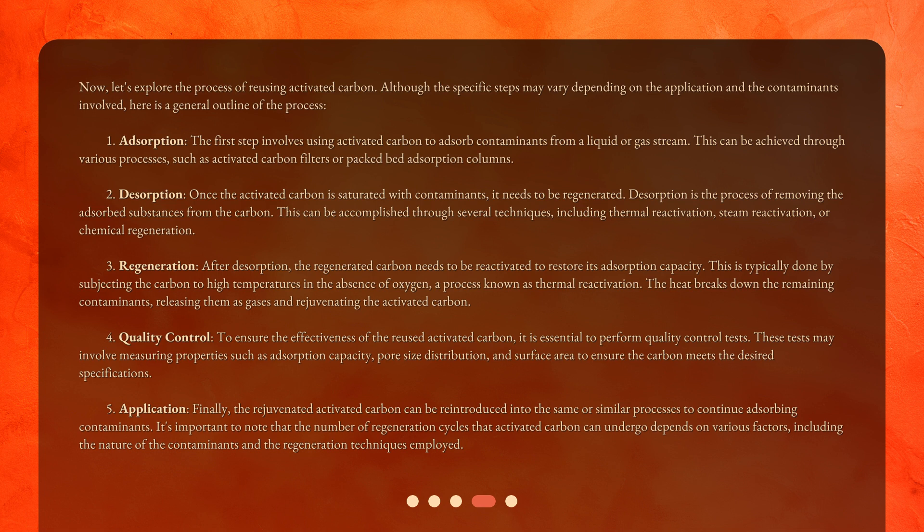Step two — desorption: once the activated carbon is saturated with contaminants, it needs to be regenerated. Desorption is the process of removing the adsorbed substances from the carbon. This can be accomplished through several techniques including thermal reactivation, steam reactivation, or chemical regeneration.